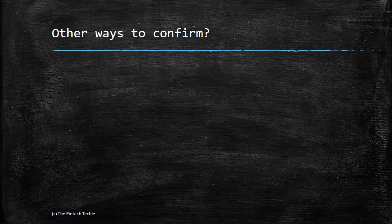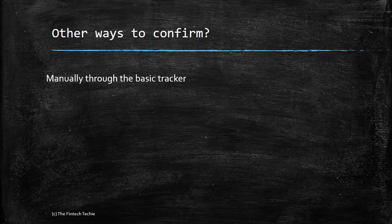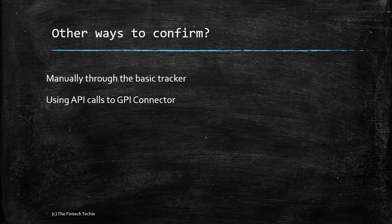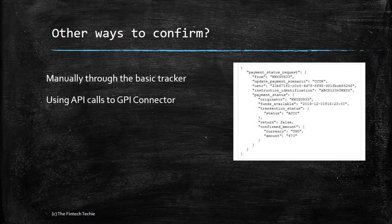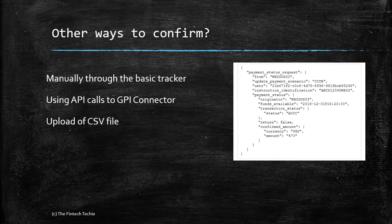MT-199 is not the only way to send confirmation to the tracker — there are other ways. One is that you can actually log into the basic tracker provided by Swift, log into the terminal, and give the confirmation. This works well for smaller banks but may not work for banks with huge volumes. The second one is an API call to the GPI connector — it's a typical JSON format. Or thirdly, if there is something to be done in bulk, you can upload it as a CSV file to the terminal. So these are the three ways to confirm apart from MT-199.